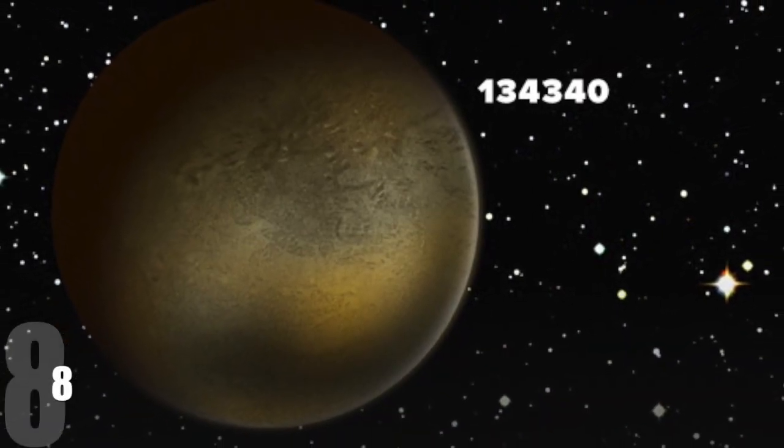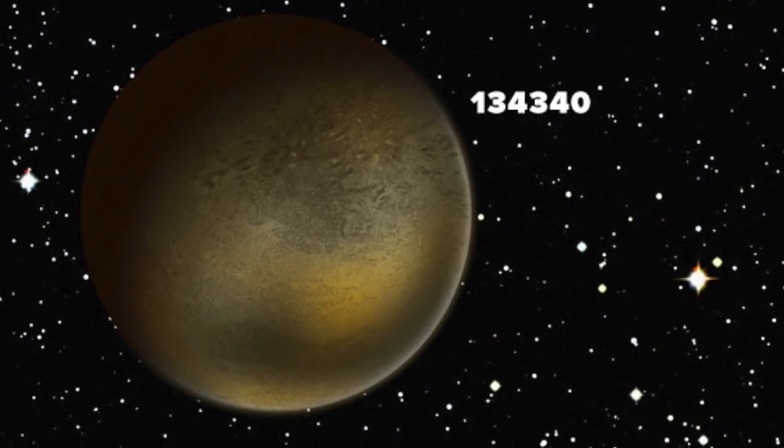Since being declassified as a planet, Pluto's technical name now is 134340. 7.